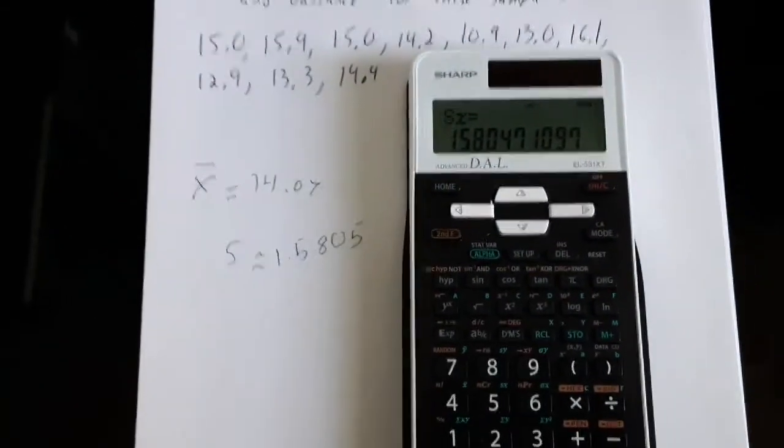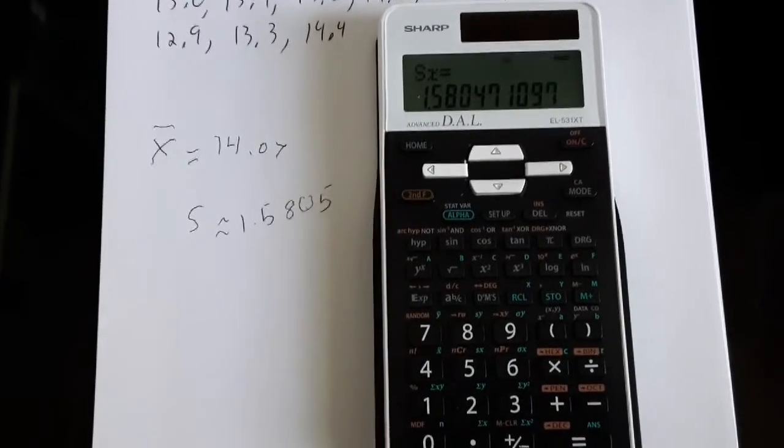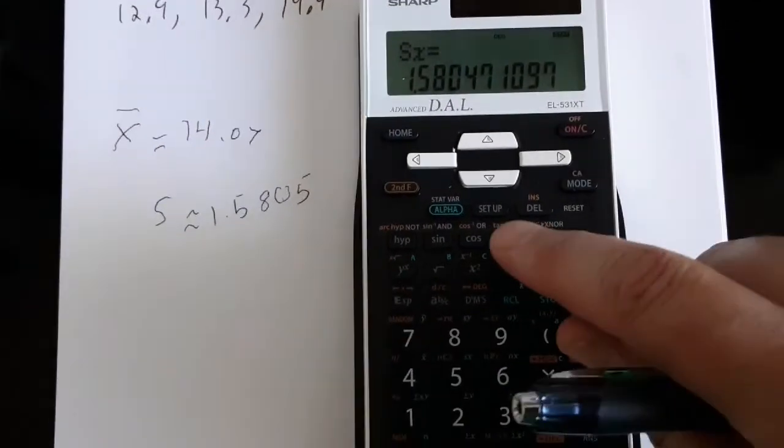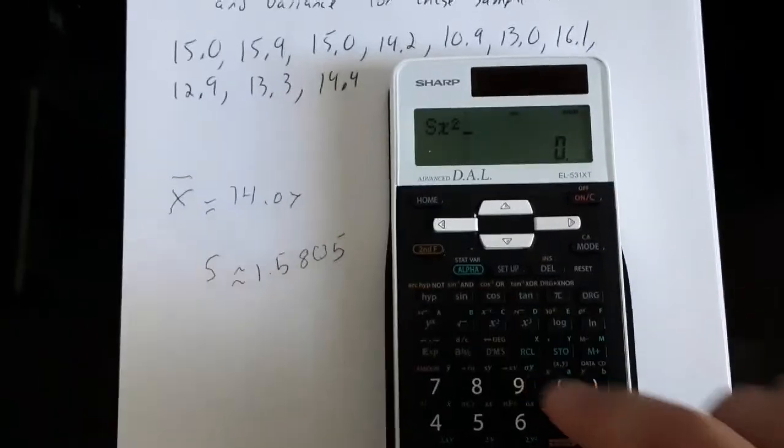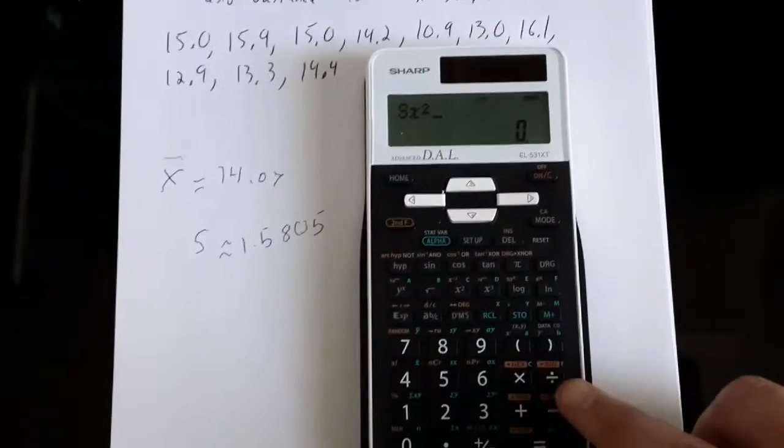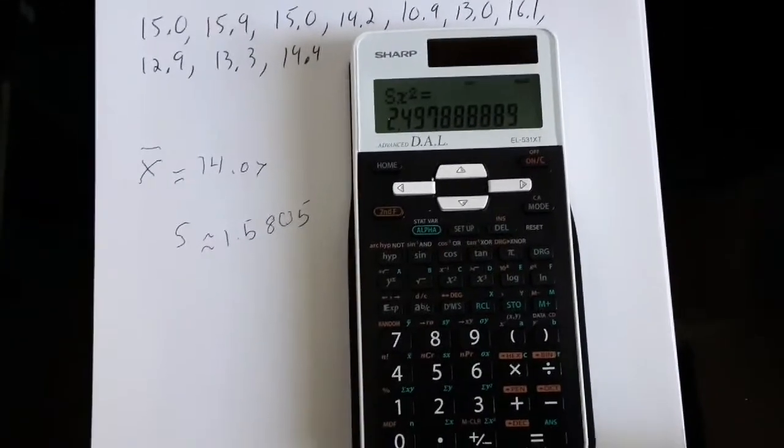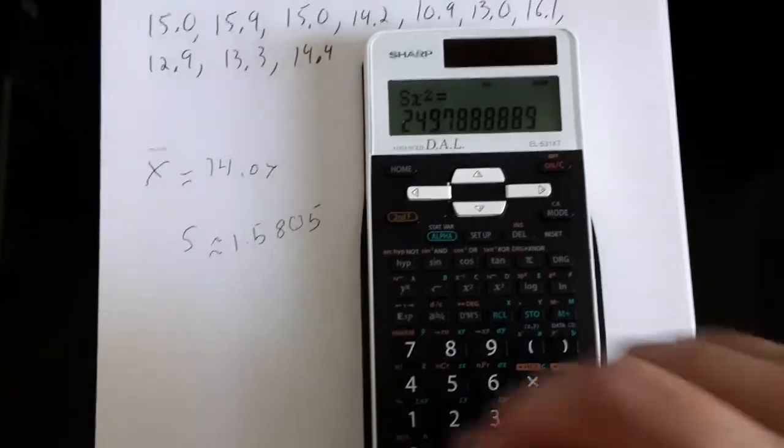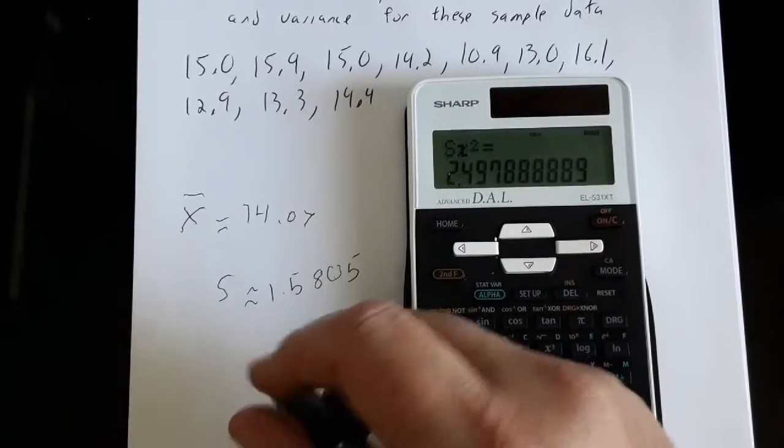And for variance, since variance is found just by squaring the standard deviation, then since I have the standard deviation, if I square it, X squared, that's the button I'll touch, and hit equals, and we can see in the display window, SX squared, the variance is 2.498.